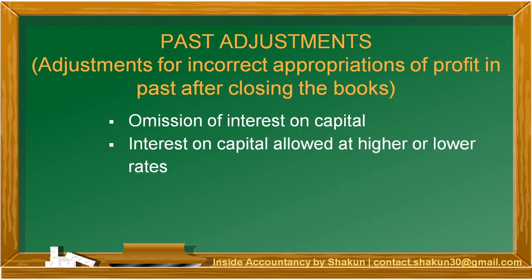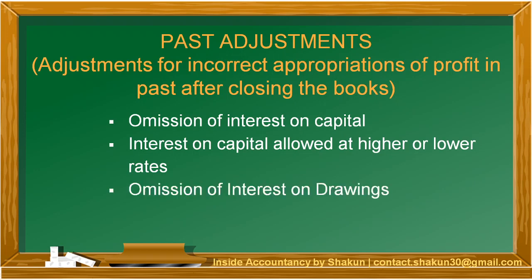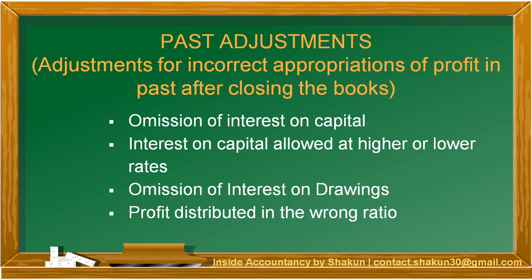Other errors can be that interest on capital has been allowed but at higher or lower rates. There may also be omission of interest on drawings — the interest on drawings has not been shown in the books of accounts. Additionally, the profit may be distributed in the wrong ratio, or there may be multiple omissions.